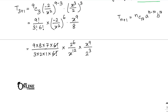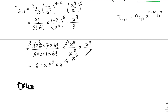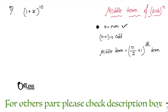So T4 = 84 · 2^6/x^12 · x^9/2^3 = 84 · 2^(6−3) · x^(9−12) = 84 · 2^3 · x^(−3) = 84 · 8/x³ = 672/x³. That is the final answer.